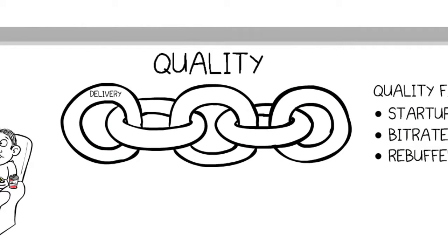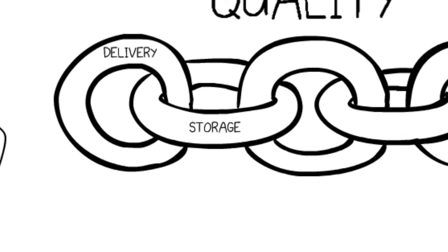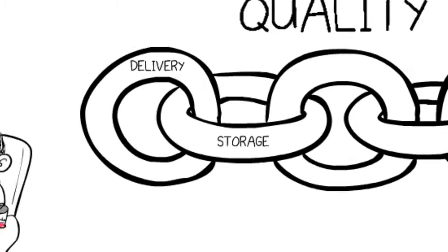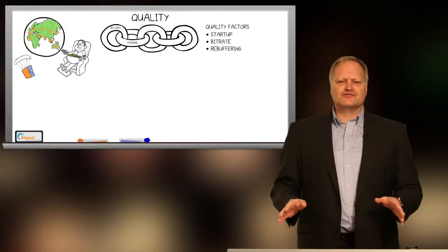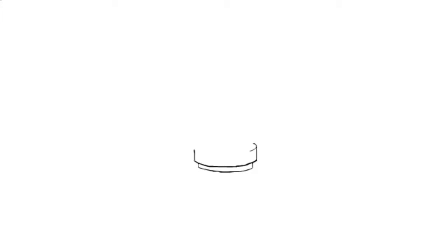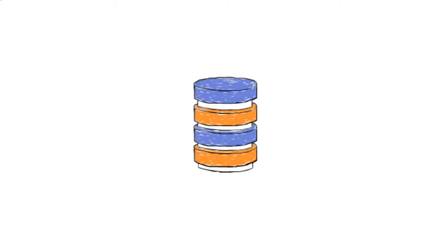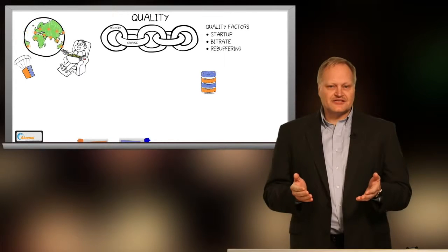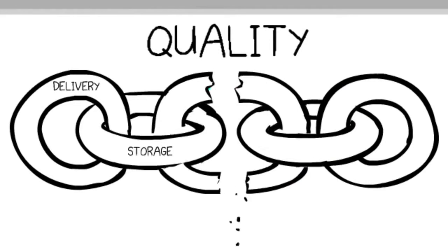The next link is high-performance storage, which must be designed to meet the needs of video delivery. Archival storage solutions designed primarily with a cost focus cannot meet the bitrate, availability, and reliability required for high-quality viewing. If used, this becomes a weak link in the quality chain.